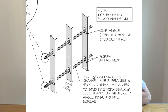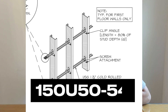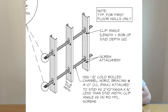Bridging is applied in the middle of metal studs to brace them and connect them all together. It's often used in load-bearing walls. A typical bridging number is 150U50 — where 150 is the width of the bridging channel, U is the shape of the channel, 50 is the flange width on the edges, and the last number is the mill thickness.